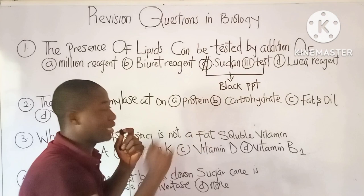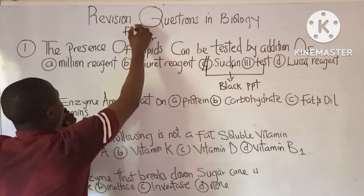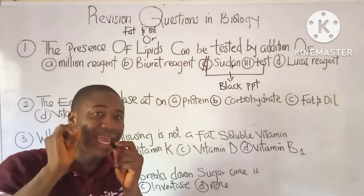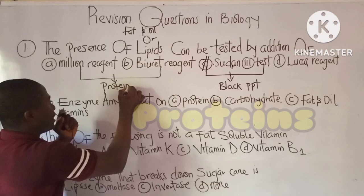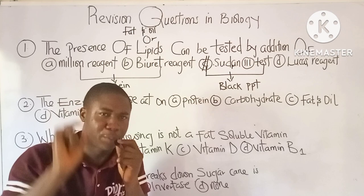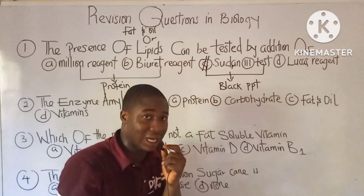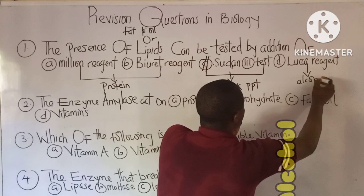Lipids are also called fats and oils, which are a class of food. The Millon's reagent and the Biuret reagent are both used to test for the presence of proteins. The Lucas reagent is used to test for the presence of alcohol, and alcohol is a group of organic compounds.